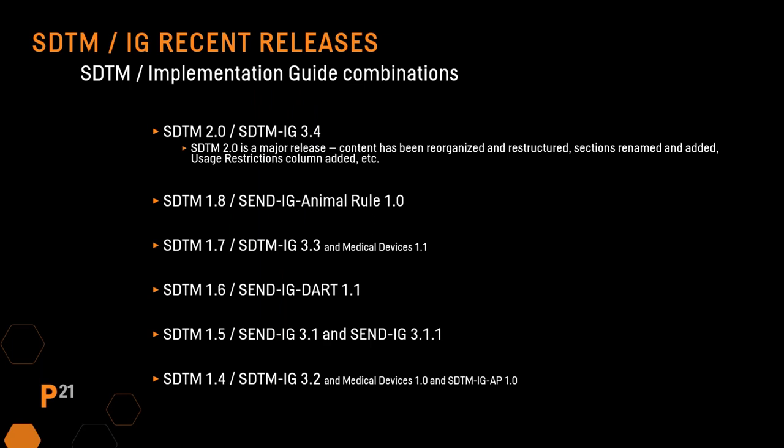Here is a quick summary of the more recent versions of SDTM and the implementation guides that accompany them. The new version of SDTM, version 2.0, corresponds to implementation guide 3.4. This is a major release with a significant amount of reorganization and restructuring. The previous version of SDTM, version 1.8, corresponds to SendIG Animal Rule, so many users may not be familiar with it unless they work on non-clinical studies. When checking for differences, we need to compare 2.0 to 1.7, the last version associated with an SDTM IG, but also account for anything added to 1.8 for SendIG Animal Rule that could also apply to clinical studies.